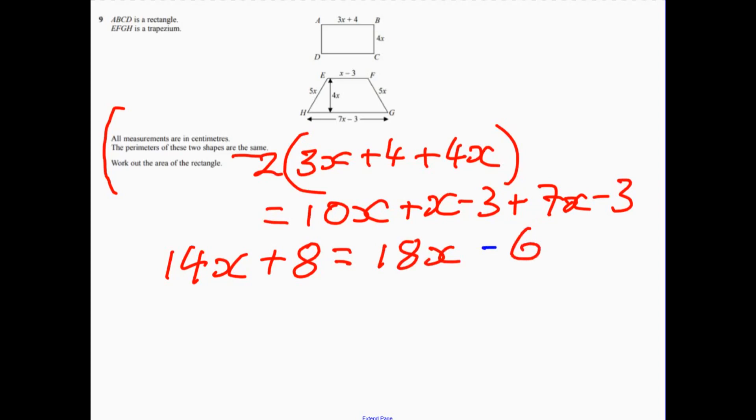Take away 14x from both sides. So that gives me 8 equals 4x minus 6. Add the 6 to both sides. So that gives me 14 equals 4x. So therefore, x must equal 14 divided by 2, which is 7 over 2, or maybe 3.5.